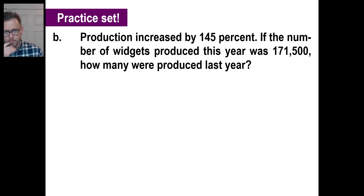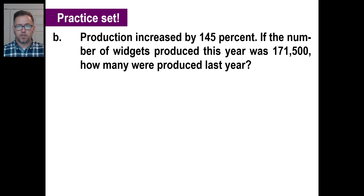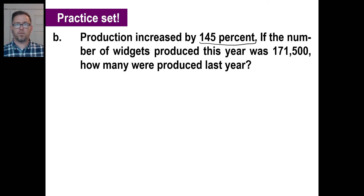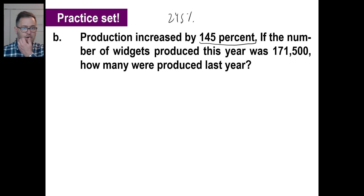Pause it and try problem B. Production increased by 145%. What percent are we dealing with now? 245%, right? If it increased by 145%, it more than doubled — if something increases 100% that's double. So our new percentage is 245%. The number of widgets this year was 171,500.